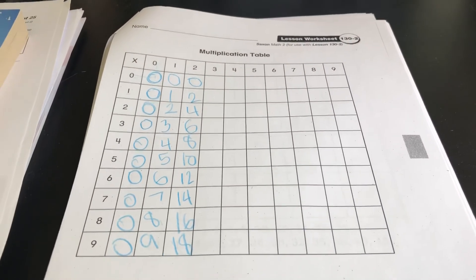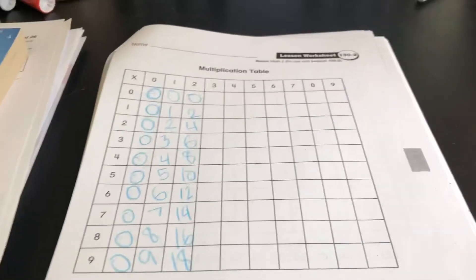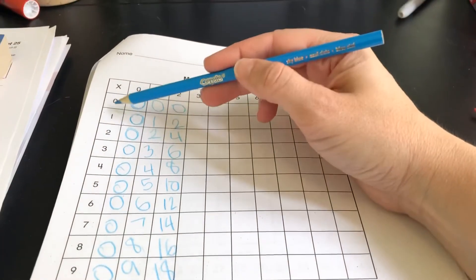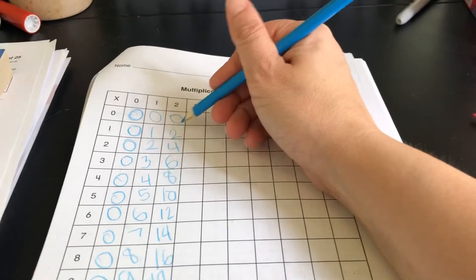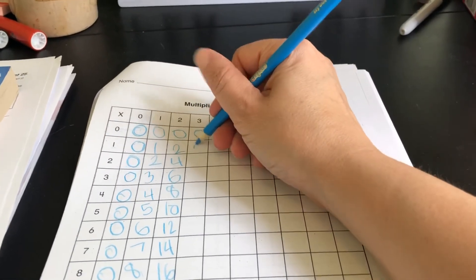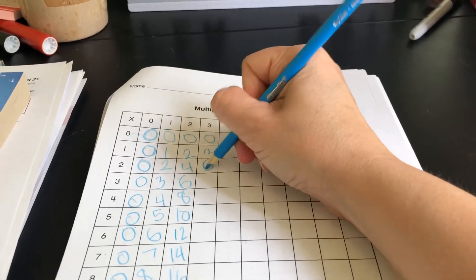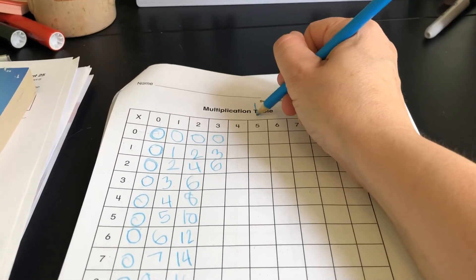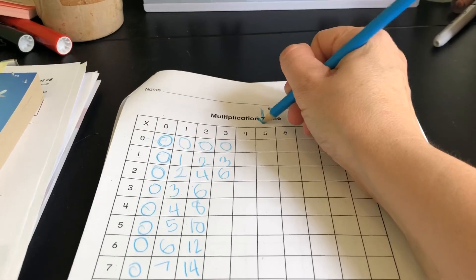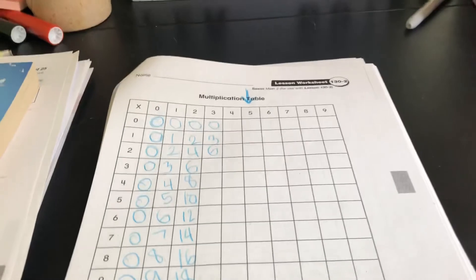All right, I want you guys to try and do the same things with three, four, and five. So we have zero times three, zero. One times three, three. Two times three, six. And you guys only need to go to five, because that's as much as we've learned in class.